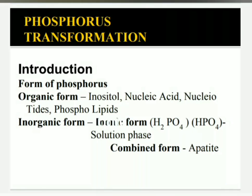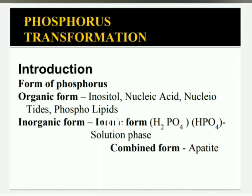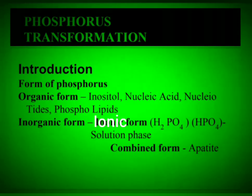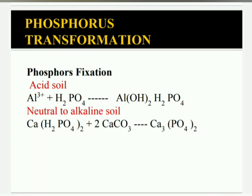Forms of phosphorus: Organic form — inositol phosphorus is the dominant organic form of phosphorus. Inorganic form of phosphorus is classified into two types: ionic form and combined form. Ionic form includes H2PO4, which is the primary orthophosphate, and HPO4, which is the secondary orthophosphate. Combined form is the apatite form.